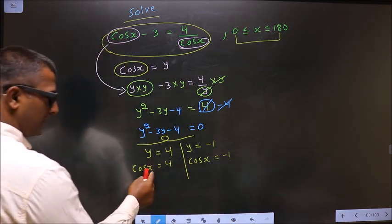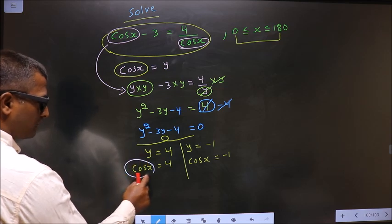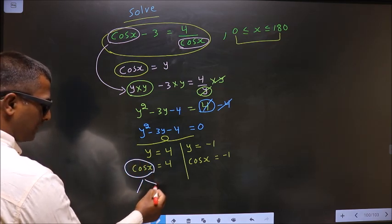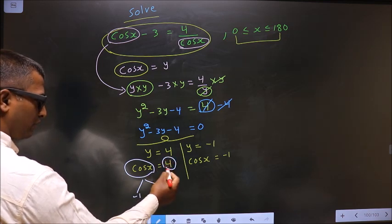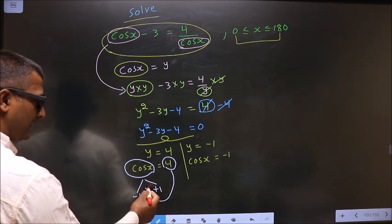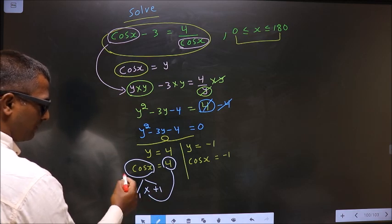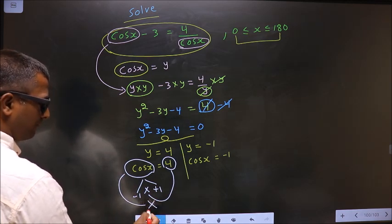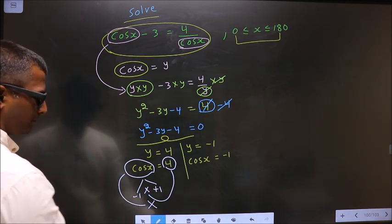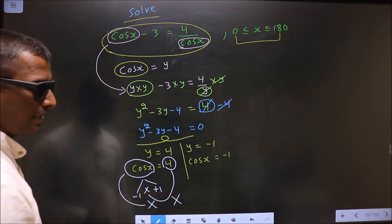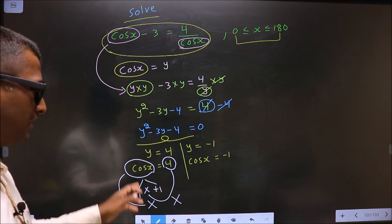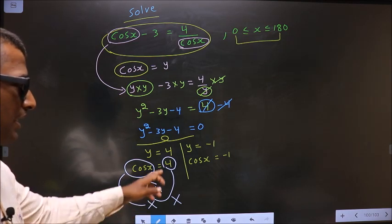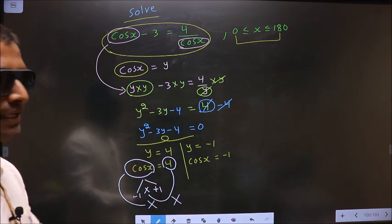Now here, the values of cos x should always lie between minus 1 and plus 1. Here 4 does not lie in this interval, so here we will not get any values for x. So reject this equation. To get any value for cos x, it should lie between minus 1 and plus 1. Here this does not lie, so reject it.